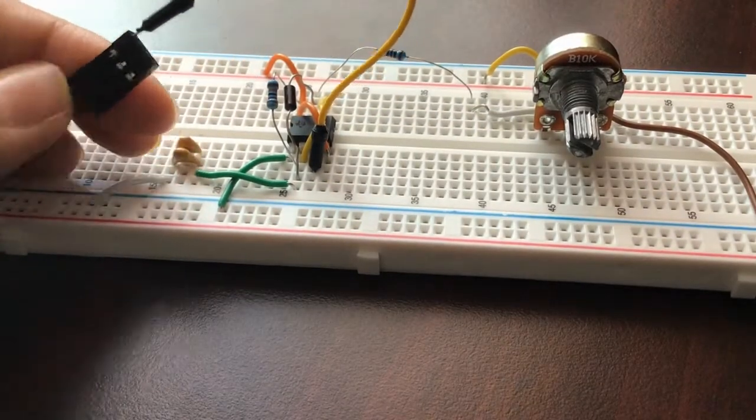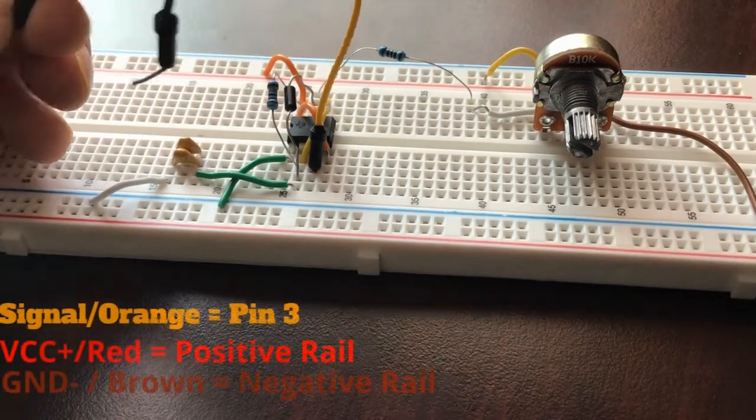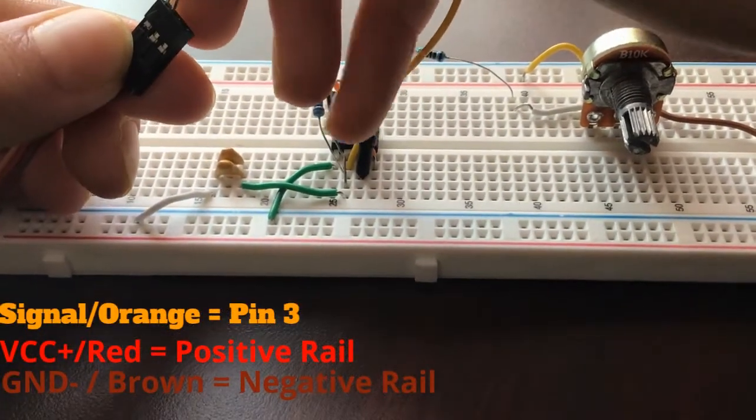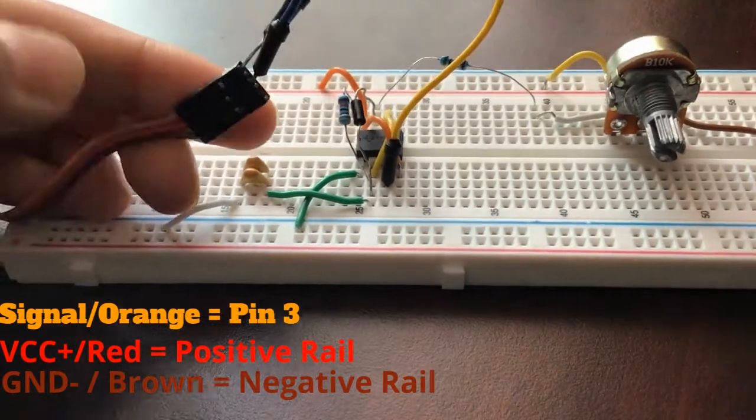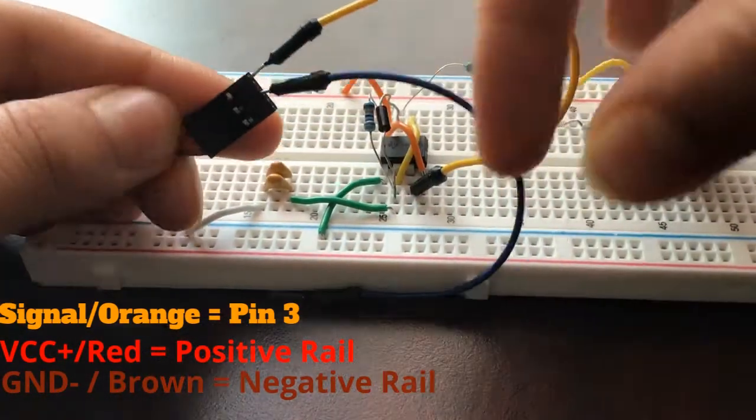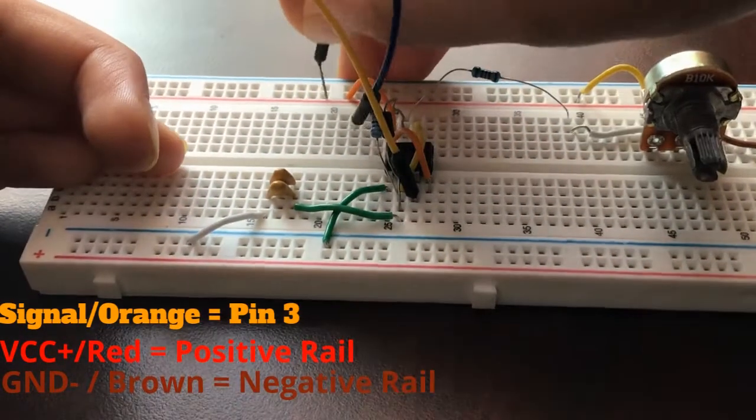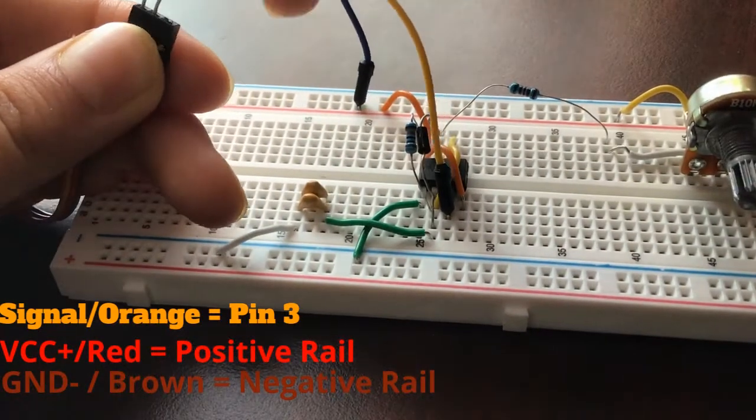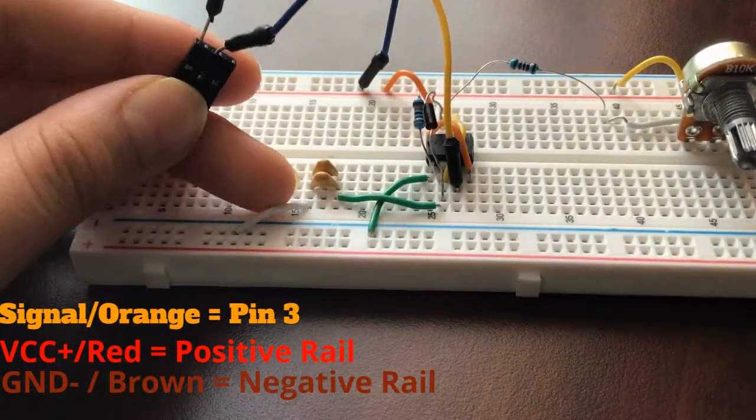For the servo motor, connect the orange pin or signal pin to pin three of the IC because that's the output. Connect the middle pin or VCC to the positive rail of the breadboard, and ground or the brown pin to the ground rail.